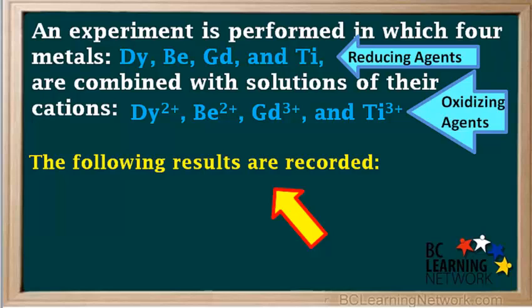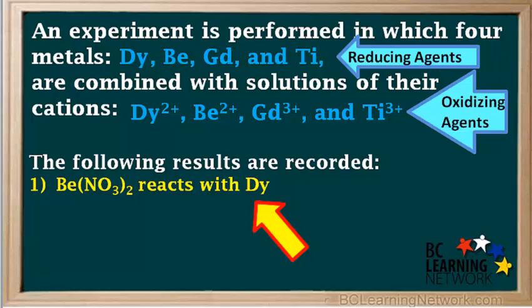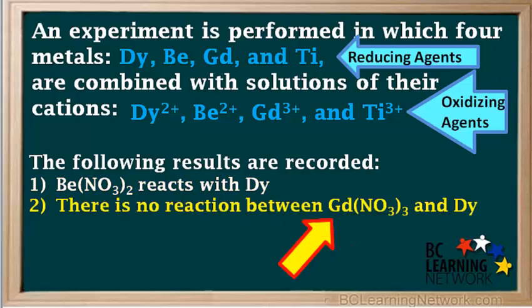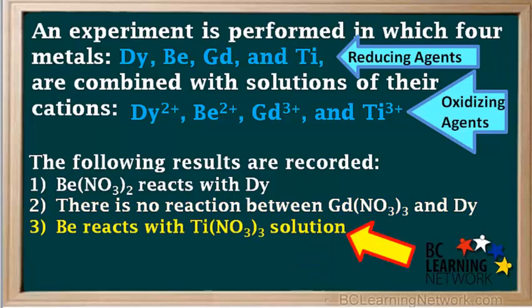When the experiment is done, the following observations are made and the results are recorded. The first observation is that BE(NO3)2 solution reacts spontaneously with DY metal. The second observation is that there is no reaction between GD(NO3)3 solution and DY metal. The third observation is that BE metal reacts spontaneously with the TI(NO3)3 solution.